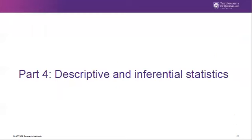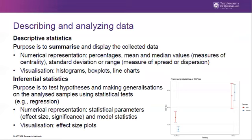Now let's talk about descriptive and inferential statistics. Since quantitative findings are represented numerically, it is important to understand what kind of numeric values we are interested in. Descriptive statistics have the purpose of organizing, displaying, and summarizing data. Data can be summarized in terms of frequencies or percentages, or in terms of means and median values, which are measures of centrality. Also commonly seen are measures of variability such as the standard deviation, dispersion, variance, or range. In terms of visualization, descriptive statistics often come with histograms, box plots, or lines.